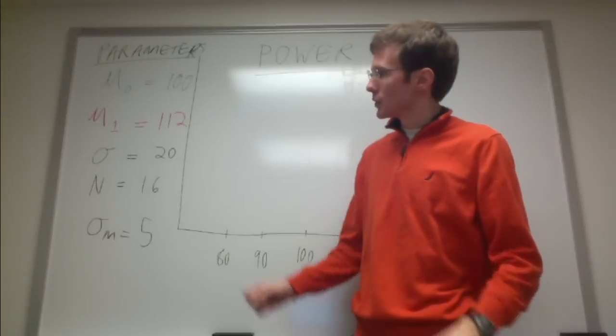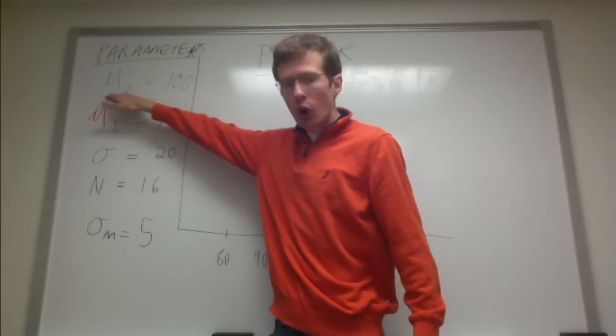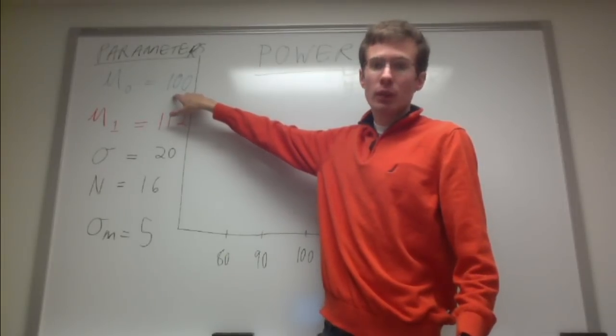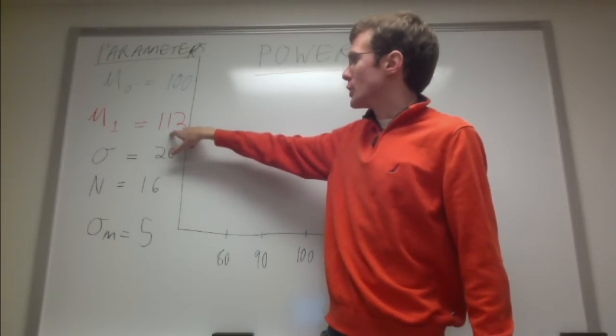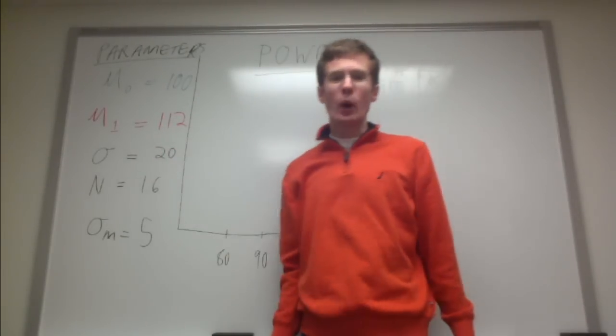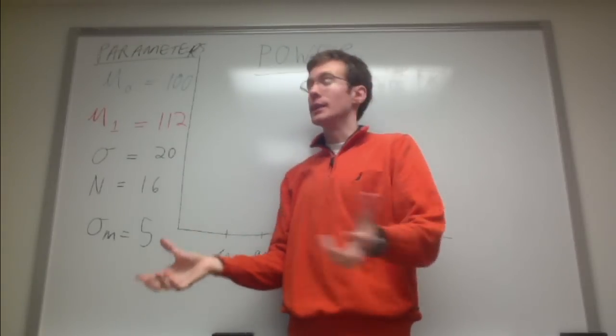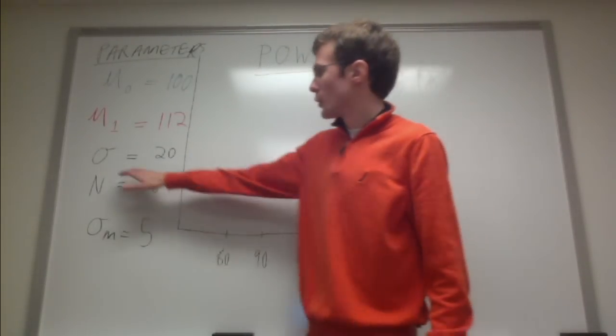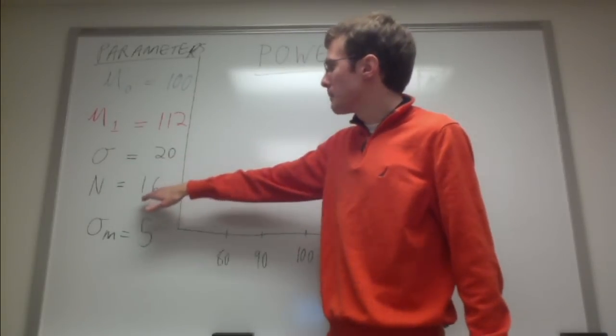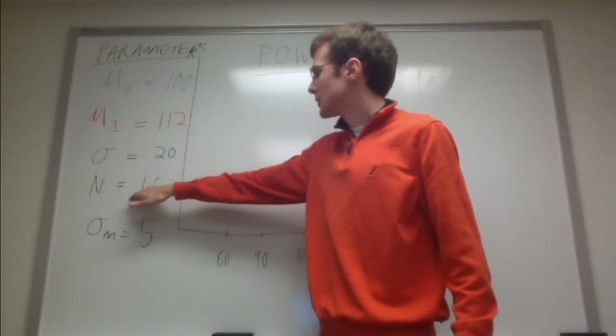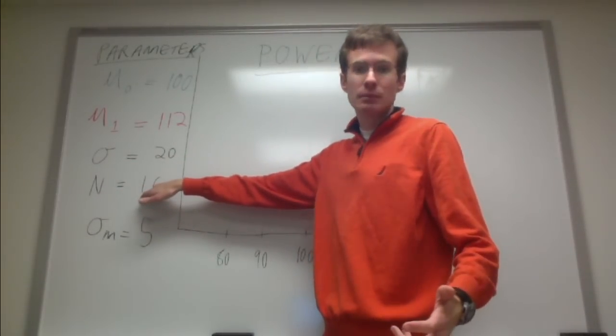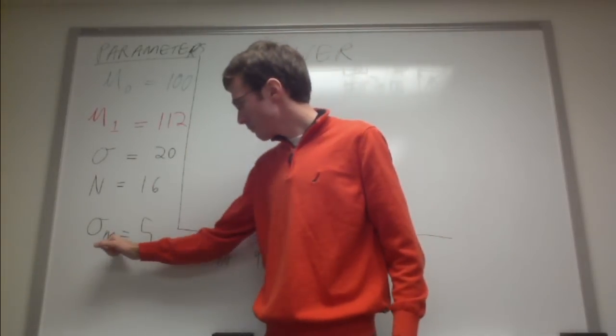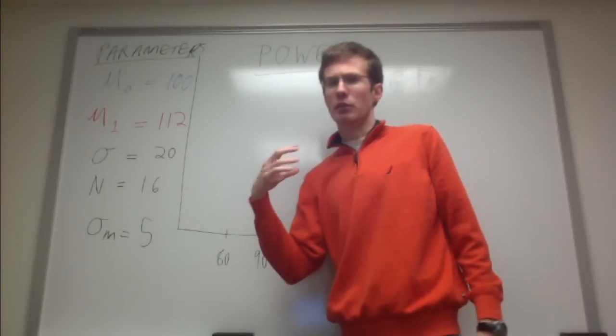To illustrate this, let's say that we have a null distribution that has a mean of 100. And the actual population mean is 112. So in this case, there actually is a difference between those two populations. Furthermore, there's a standard deviation of 20 and let's say that we're sampling sizes of 16. So 16 people in each sample from these populations, giving us a standard error of 5.